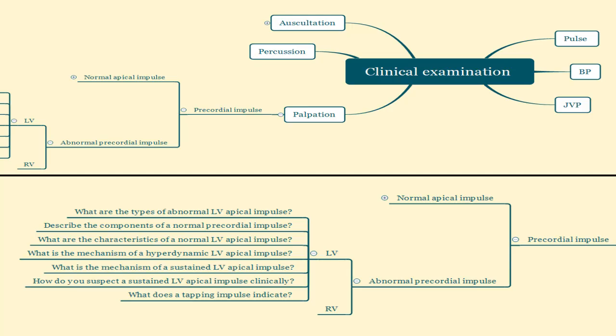Let's mind map today's topic. We're going to be talking about a clinical examination video of palpation, under which falls precordial impulse. We've already talked about normal apical impulse and today is abnormal precordial impulse — specifically the left ventricular abnormal apical impulse. For the sake of active recall, these are the questions for you to try and answer before and after watching this video.